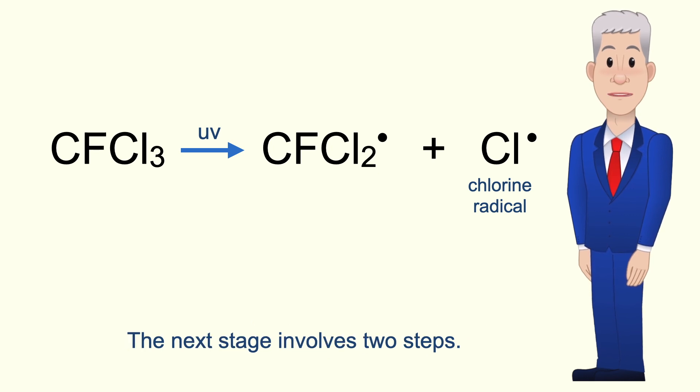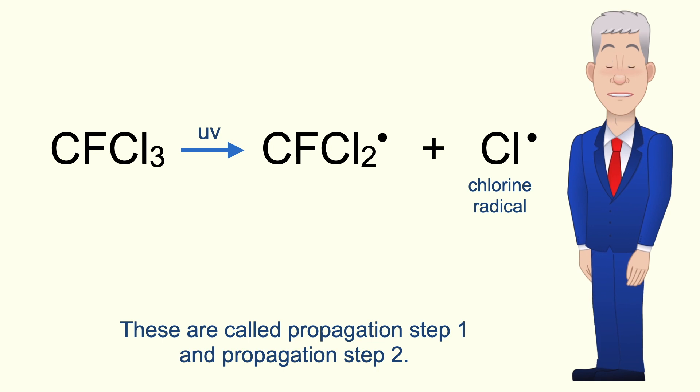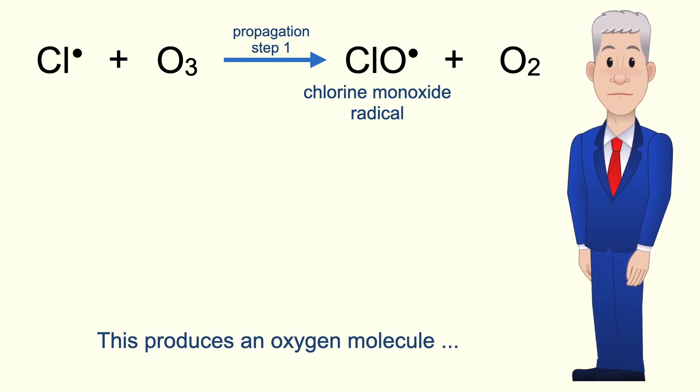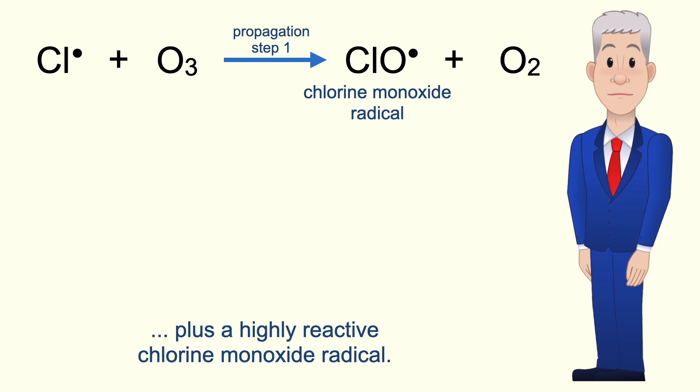The next stage involves two steps. These are called propagation step one and propagation step two. In propagation step one, a chlorine radical reacts with a molecule of ozone. This produces an oxygen molecule plus a highly reactive chlorine monoxide radical.